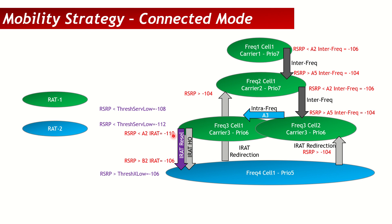Excessive handover signaling degrades user experience significantly. During inter-frequency or inter-RAT handovers, the device enters compressed mode — a guard period to search other frequencies — which impacts throughput. More inter-RAT handovers also mean higher drop rates. Setting reselection thresholds to trigger before handover thresholds reduces signaling overhead and improves KPIs, so it's always good practice to let idle mode mobility handle users before connected mode kicks in.